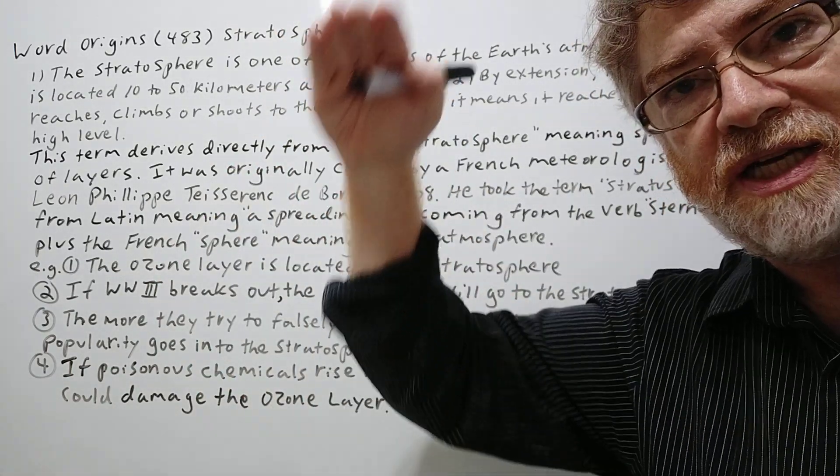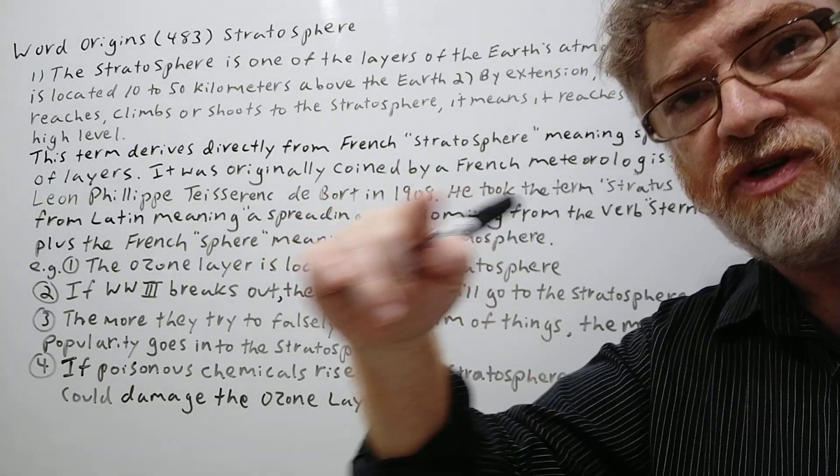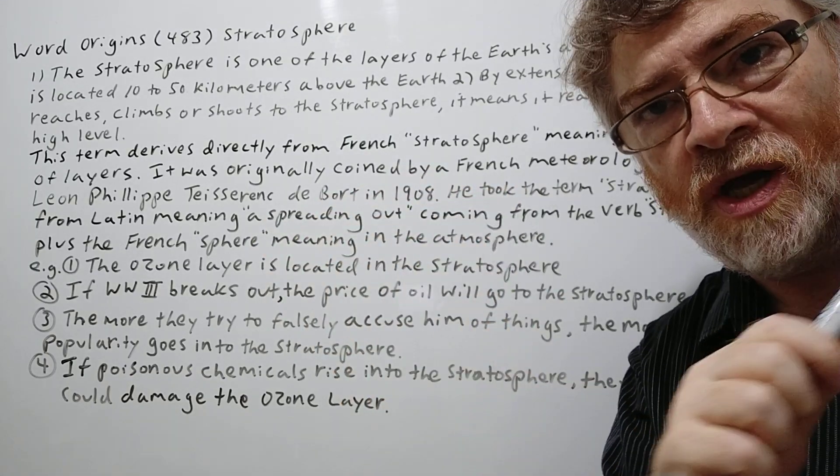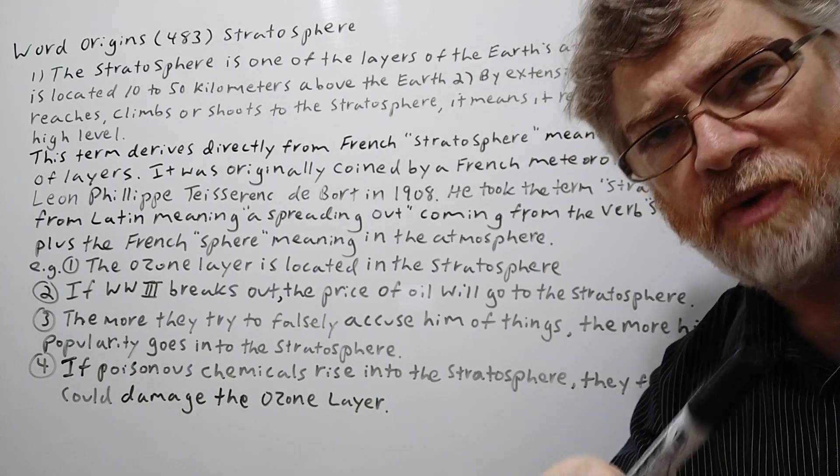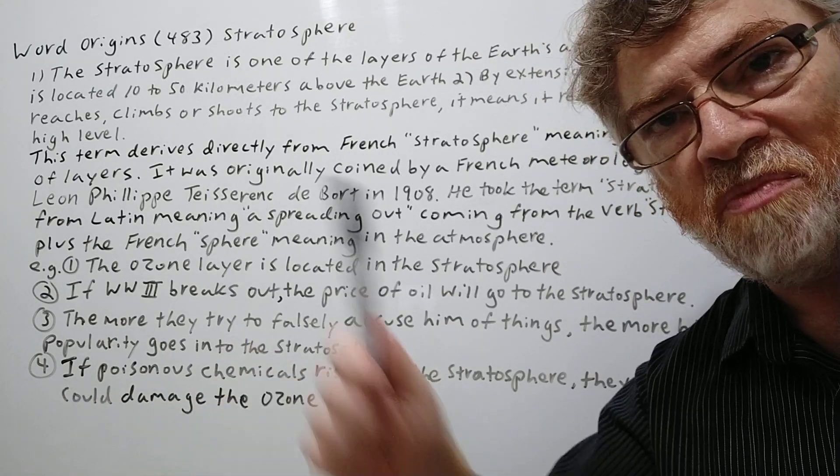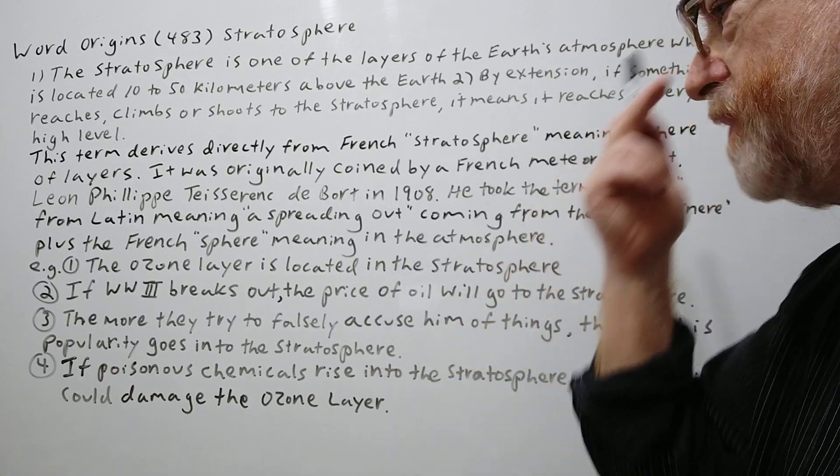There's a lot of levels, a lot of spheres above the Earth, and stratosphere is just one. But that is where the ozone layer is located, so that's why we probably know this sphere more than some of the other spheres.